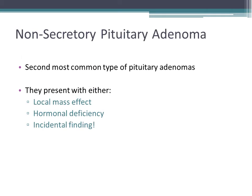Moving forward to non-secretory pituitary adenomas, these are the second most common type of pituitary adenomas. The most common type, discussed previously, was prolactinomas, which is a secretory tumor. Here we are discussing non-secretory pituitary tumors, which present due to mass effect, affecting vision, or causing hormonal deficiency through the tumor's presence.